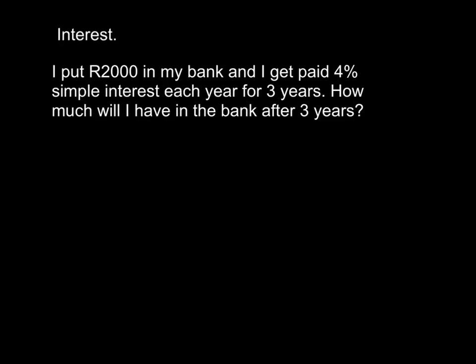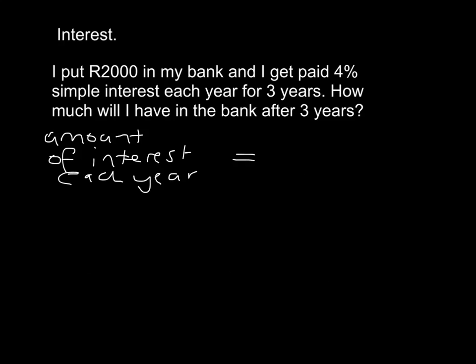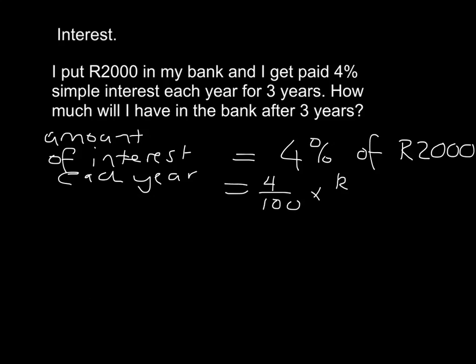If you put 2,000 rand in the bank and you get paid 4% simple interest each year for three years, how much will you have after three years? 4% simple interest means you get paid 4% of the original amount each year. So the amount of interest each year will be 4% of 2,000. That's 4 over 100 times 2,000 - dividing top and bottom by 100, we get 4 times 20, which is 80 rand. So each year the bank gives you 80 rand in interest.